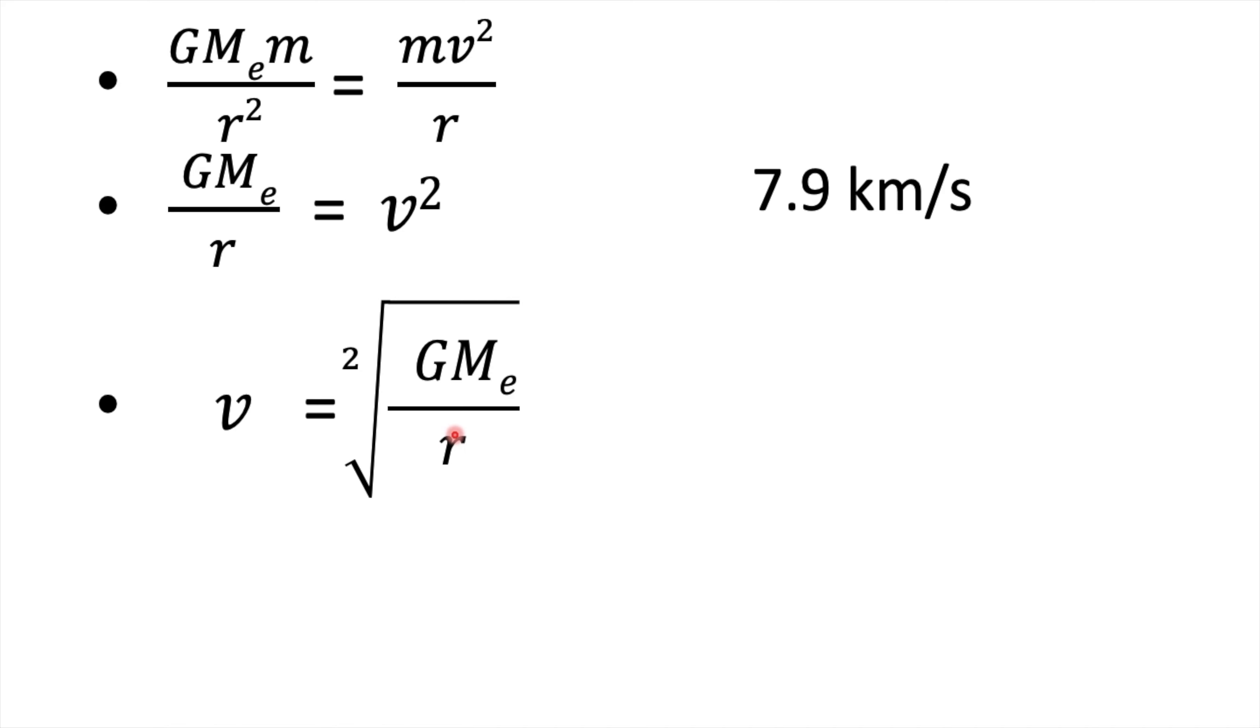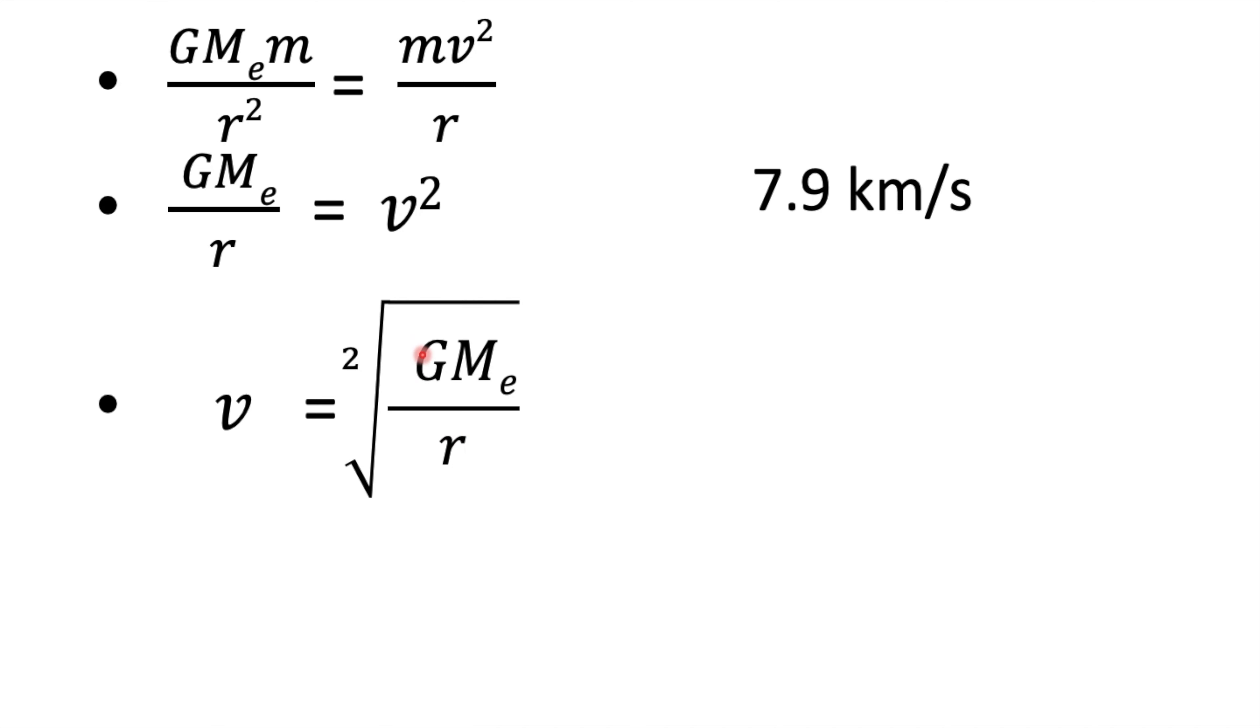Now as we have considered that the moving object is rotating just near the ground, it means the value of r can be considered as the radius of the earth. Here we have discarded the value of h as it is just moving near the ground.